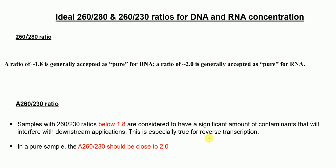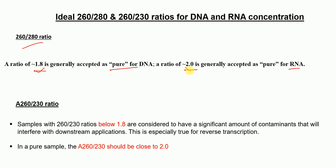What are the ideal 260/280 and 260/230 ratios for DNA and RNA concentration measurement? The ideal 260/280 ratio for pure DNA is approximately 1.8, whereas a ratio of approximately 2.0 is generally accepted as pure for RNA.